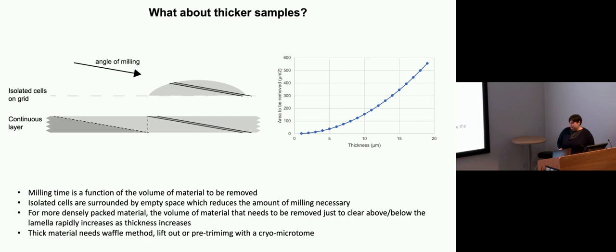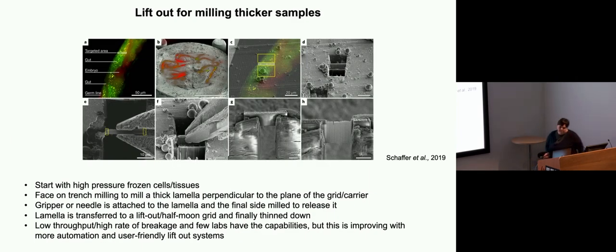There are two main methods, lift out or the waffle method. Or additionally, there are some more, I think, very project-specific approaches that involve doing some pre-trimming steps with a microtome as well. But if we start by looking at lift out. This example, these are C. elegans larvae. This time, it's high-pressure frozen. This is the planchette, the sample carrier with this big block of ice. Here, cryo-fluorescence microscopy is used to identify where the worms actually are to mill.